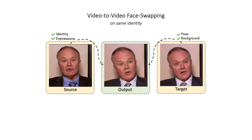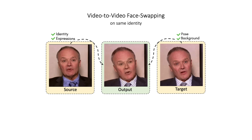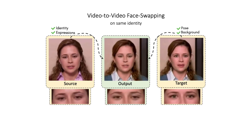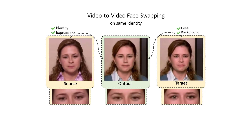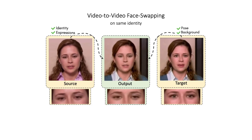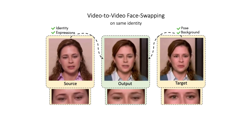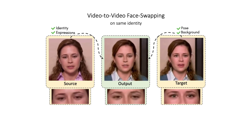We show some results on V2V face swapping for the same identity. As can be seen, the identity is perfectly preserved along with the pose and background. Only expressions such as the eye and lip movements are swapped from the source.